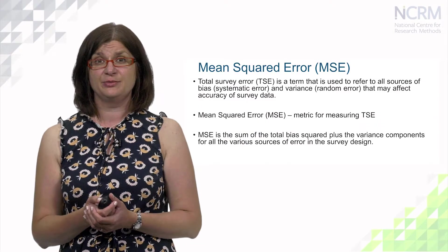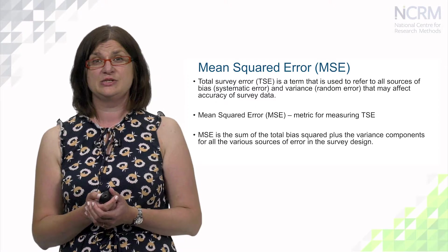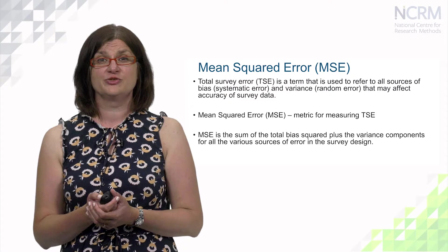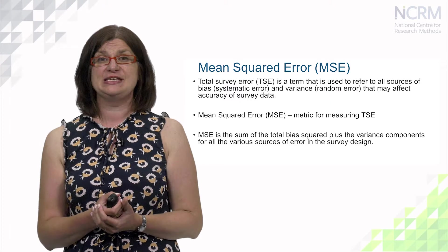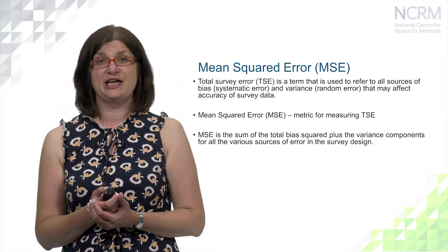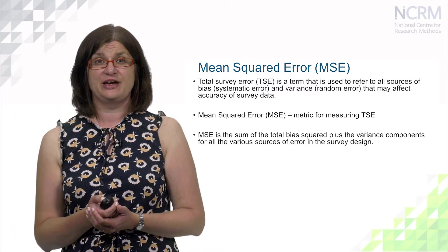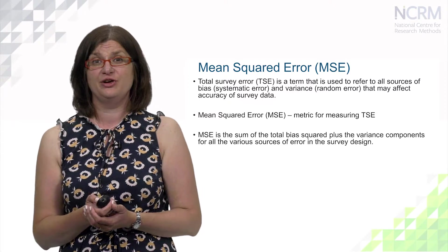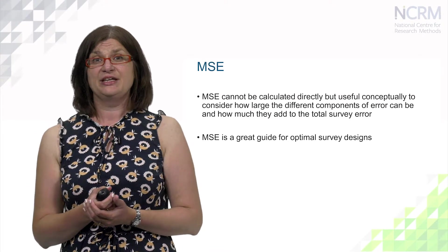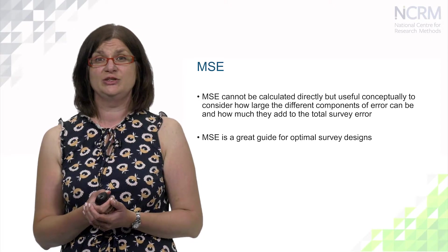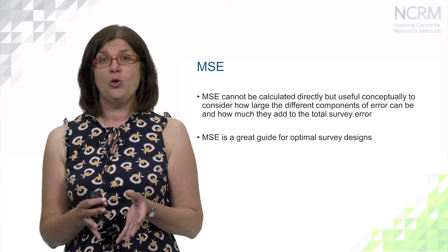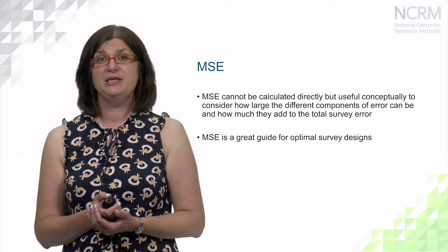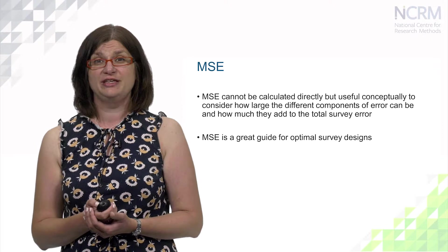Total survey error is a term used to refer to all sources of bias or systematic error and variance or random error that may affect the accuracy of survey data. Mean squared error is a metric for measuring total survey error; it is the sum of total bias squared plus the variance components for all the various sources of error in the survey design. Although mean squared error cannot be calculated directly, it is very useful conceptually and is a great guide for optimal survey design, widely used by statistical organizations.